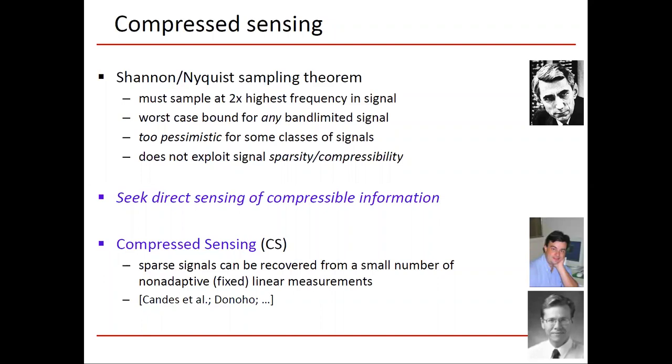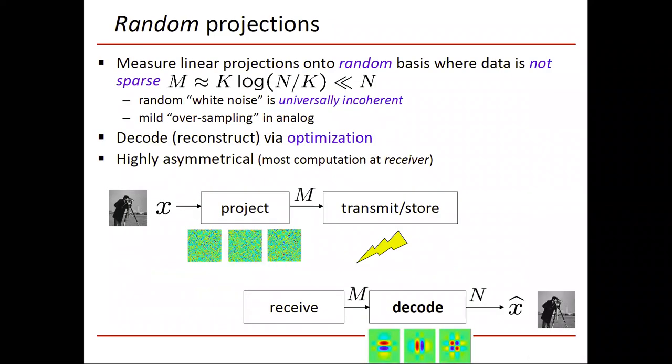Compressed sensing comes out of the observation that sparse signals can be recovered from a small number of non-adaptive linear measurements. Candes and Donoho were some of the early innovators, and there's been a lot of activity over the last 10-15 years. So the idea is as follows: we take x and we project it onto these random noise basis vectors.